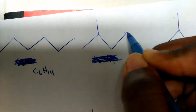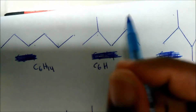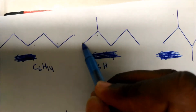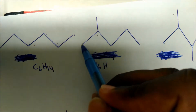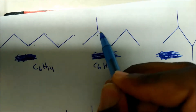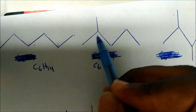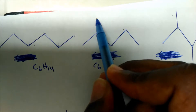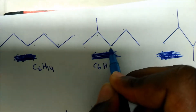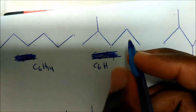Look at this one again. Counting carbons: 1, 2, 3, 4, 5, 6 — so we have six carbons, C6. Now we need hydrogens. This endpoint carbon is bonded to three hydrogens. Be careful here — there's only one hydrogen because there are already three bonds to that carbon, so we need one more to satisfy the octet. Counting: three plus one is four, plus three more is seven, plus two is nine, plus two is eleven, plus three gives us 14 hydrogens.